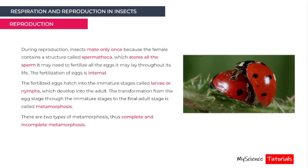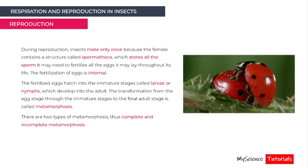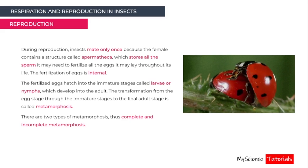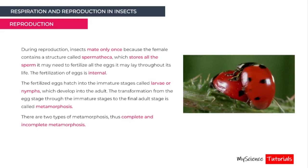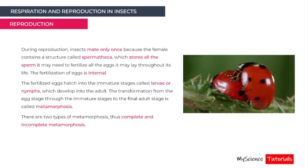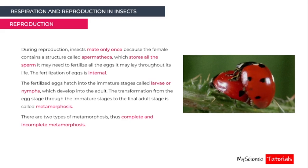During reproduction, insects mate only once because the female contains a structure called the spermatheca, which stores all the sperm needed to fertilize all the eggs she may lay throughout her life. Fertilization is internal. The fertilized eggs hatch into immature stages called larvae or nymphs, which then develop into the adult. The transformation from egg to immature stage to adult is called metamorphosis.